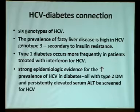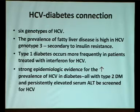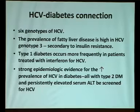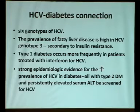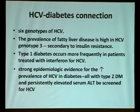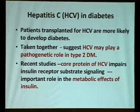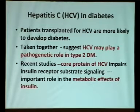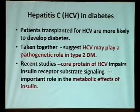There are six genotypes of hepatitis C virus. The prevalence of fatty liver disease is high in hepatitis C, particularly genotype 3, secondary to insulin resistance. Type 1 diabetes occurs more frequently in patients treated with interferon for HCV. Strong epidemiological evidence suggests increased prevalence of HCV in diabetes. All patients with type 2 diabetes and persistently elevated serum ALT should be screened for HCV infection. Hepatitis C virus may play a pathogenic role in type 2 diabetes — the core protein of HCV impacts insulin receptor substrate signaling, leading to the development of diabetes.